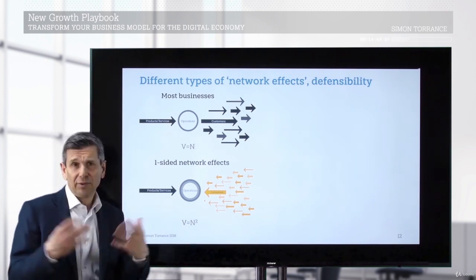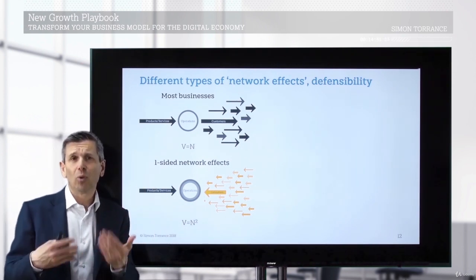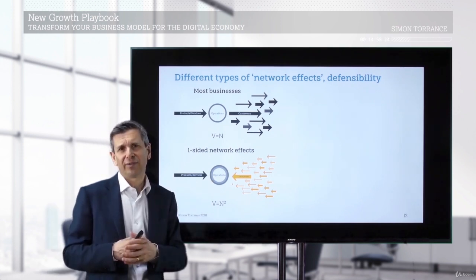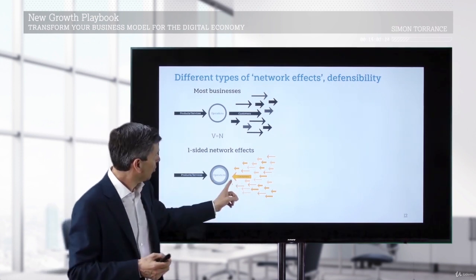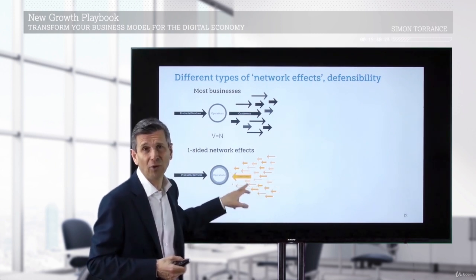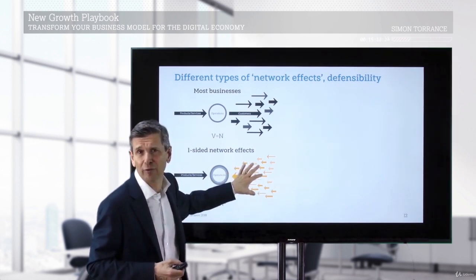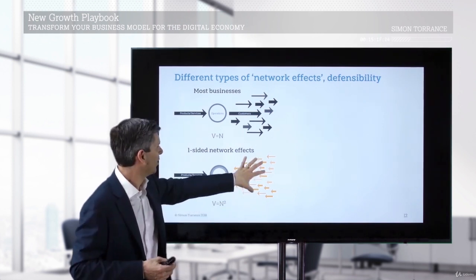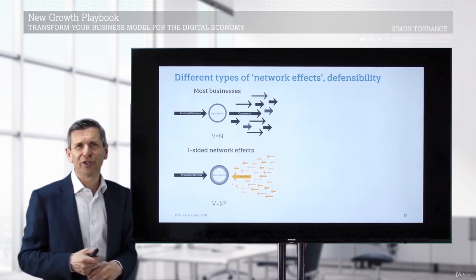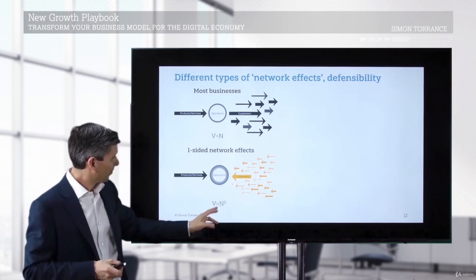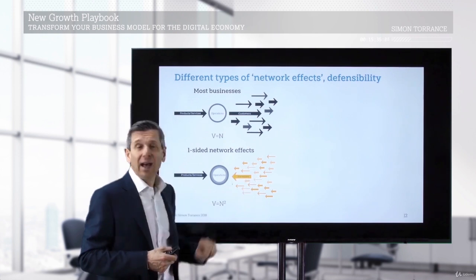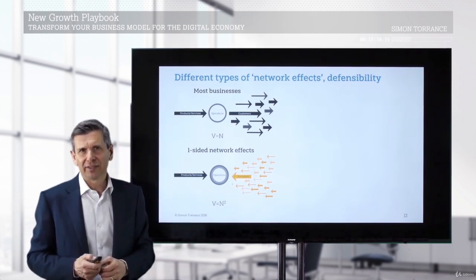In the traditional world there are quite a few one-sided network effects, and the best example is the telephone network. A telephone company provides the service for you and me to speak to anyone. The service isn't any use if I can only speak to one person — there's value if I can connect to anybody I want to. There is a network effect: value for me as the consumer to be a participant in this network, but it's one-sided. The company makes money from the users of the service. In mathematical terms, value tends to be the square of the number of users — so it's better than a linear business, but it's still not a full multi-sided platform business.